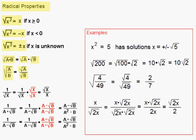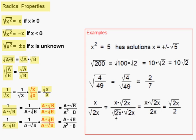We can rationalize the denominator of a fraction like 1 over the square root of x by multiplying by another radical on the top and bottom so that we have no radical in the denominator. We do this by multiplying by square root of x over square root of x, which equals 1, so we have not changed the value. The result is square root of x over x. If we have a radical that's a binomial, like 1 over a plus square root of b, we multiply by the conjugate of the denominator. Likewise, if the denominator were 1 minus square root of b, we rationalize by multiplying by 1 plus the square root of b. We'll look at some examples of this in the next few pages.